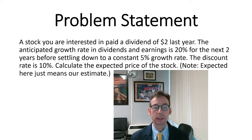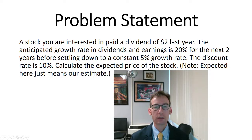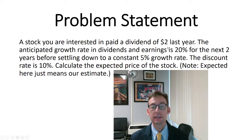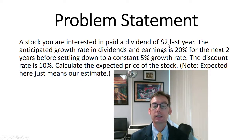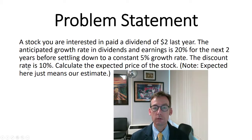Let's review the problem statement. On a finance problem, you always want to look at what the question is asking — here, the expected price of the stock, which just means our best estimate. The stock you're interested in paid a dividend of $2 last year. 'Last year' is past tense, so this is D0, but we don't receive D0 — it's given so we can calculate D1 and so forth. The anticipated growth rate in dividends and earnings is 20% for the next two years before settling down to a constant 5% growth rate. The discount rate is 10%, which means required return.